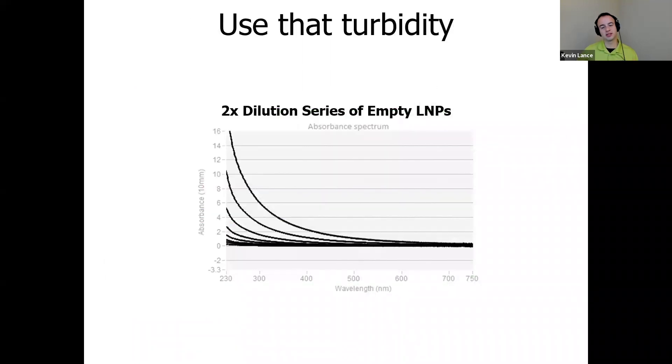And another tool Stunner has in its belt is turbidity quantification. Where turbidity is normally a massive problem for a lot of UV-Vis instruments, Stunner is able to understand turbidity and analyze it to tell you a bit more information about what's going on with your particle.